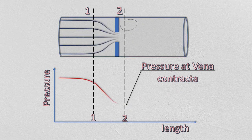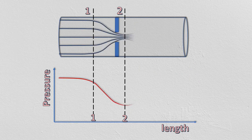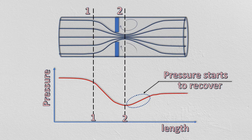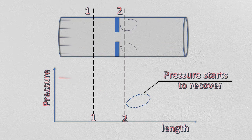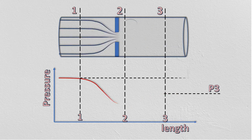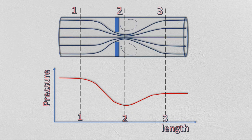Downstream of vena contracta, fluid velocity reduces and fills the pipe again. Due to reduction in fluid velocities, the pressure increases and tends to recover to its original level. The pressure at section 3 is always less than pressure at section 1.